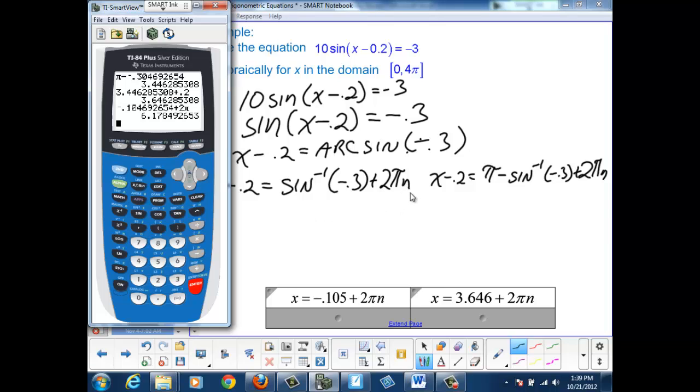When n = 1. The solution when n = 0 didn't meet our requirements for the restricted domain. When n = 1, we have the solution of 6.178.